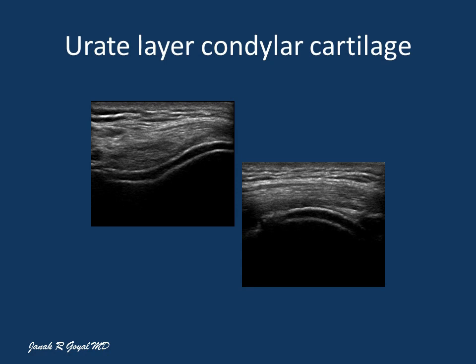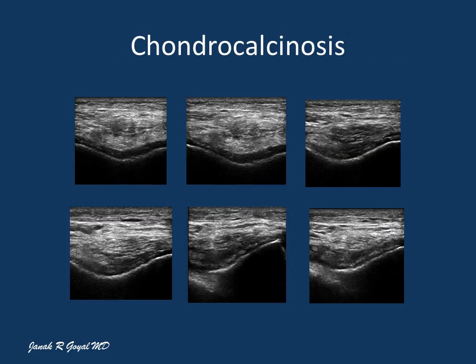Here is a hyperechoic layer on the surface of the cartilage from uric acid deposits in a patient with gout, resulting in a double contour sign. Here are sonographic images from multiple patients with chondrocalcinosis showing multiple forms of deposits within the cartilage, with many different forms of deposits visible in the chondral cartilage.